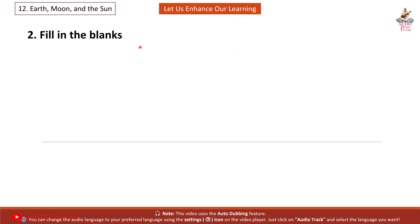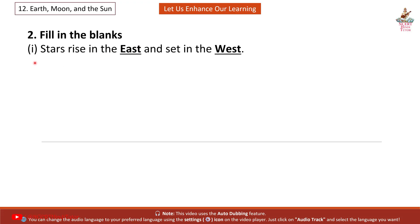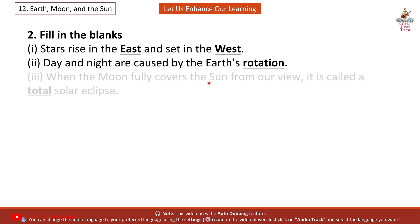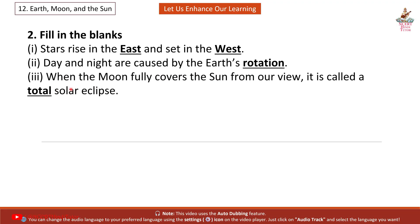Question 2. Fill in the blanks. 1. Stars rise in the east and set in the west. 2. Day and night are caused by the Earth's rotation. 3. When the Moon fully covers the Sun from our view, it is called a total solar eclipse.